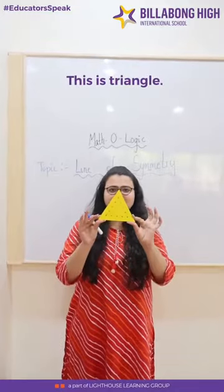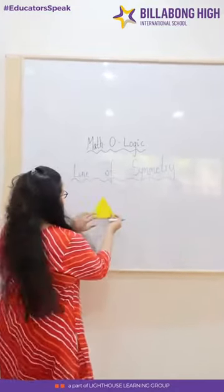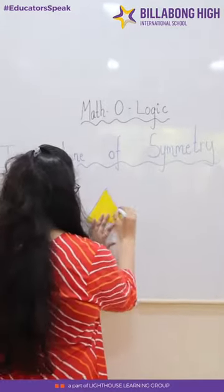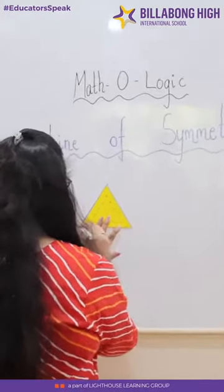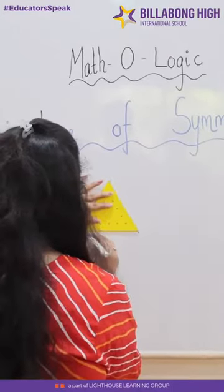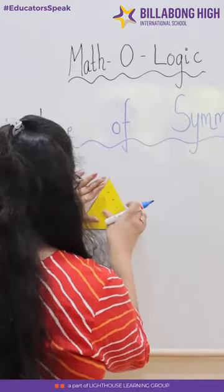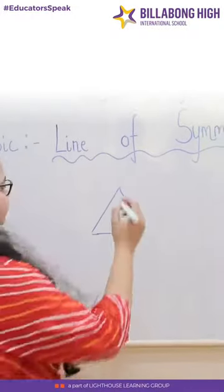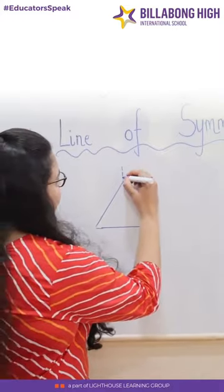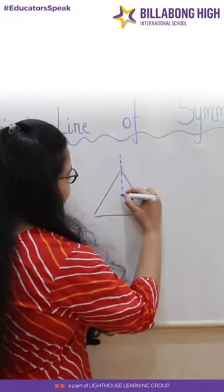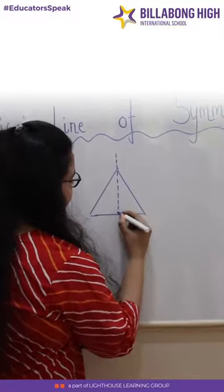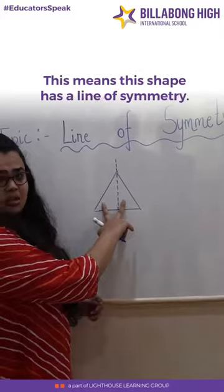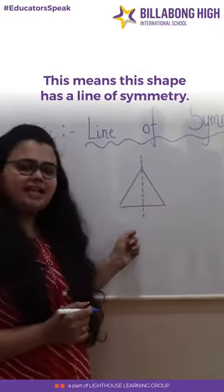Let us take one shape. This is a triangle. Let us make a line in the centre. Can you see these two identical parts? This means this shape has a line of symmetry.